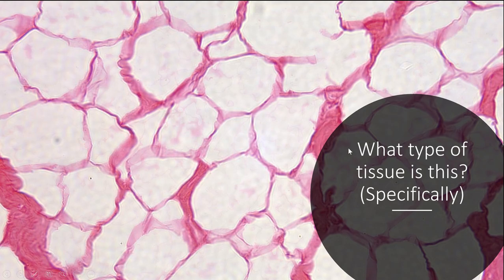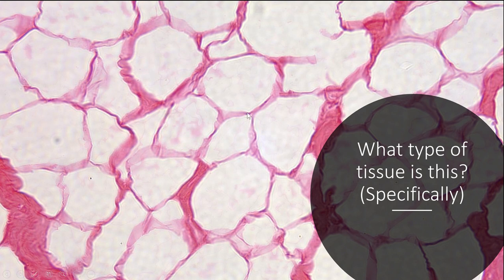What type of tissue is this specifically? Hopefully you recognize this is white fat, or adipose tissue — it looks like chicken wire, a bunch of little links in a fence. There's collagen and connective tissue connecting all these fat cells. The actual fat inside just doesn't stain well, so it looks empty, but there is fat being stored in there. That's why it has this chicken wire appearance, surrounded by loose irregular connective tissue.